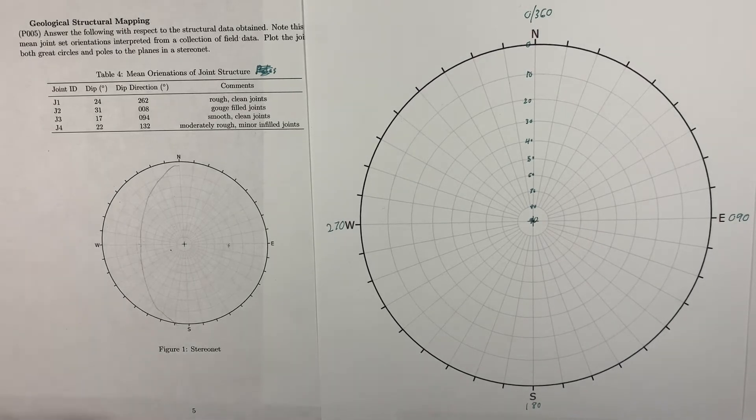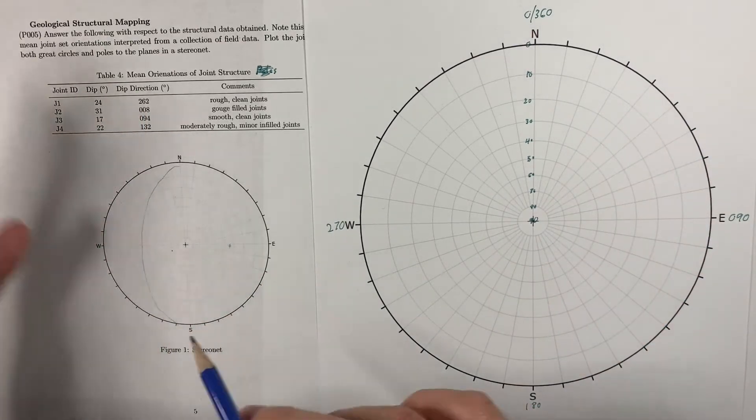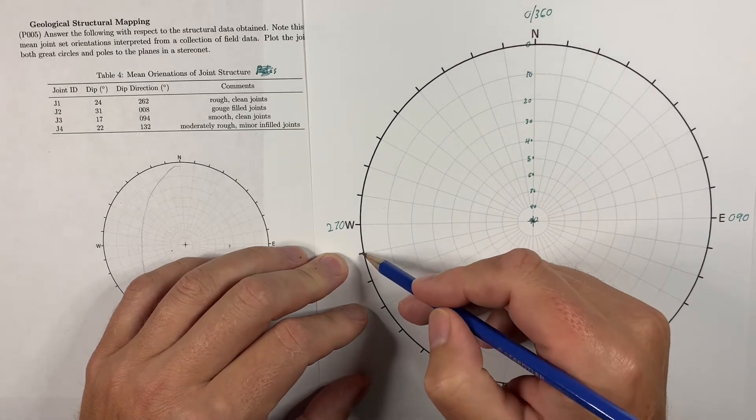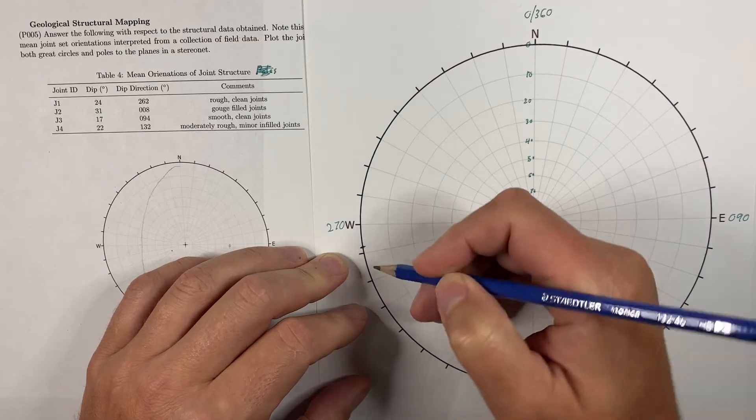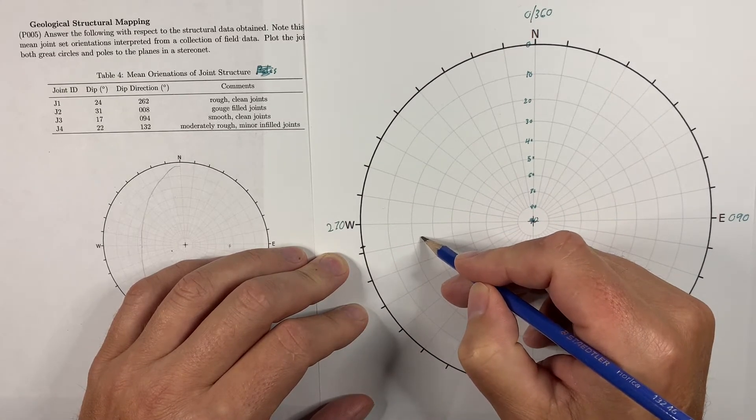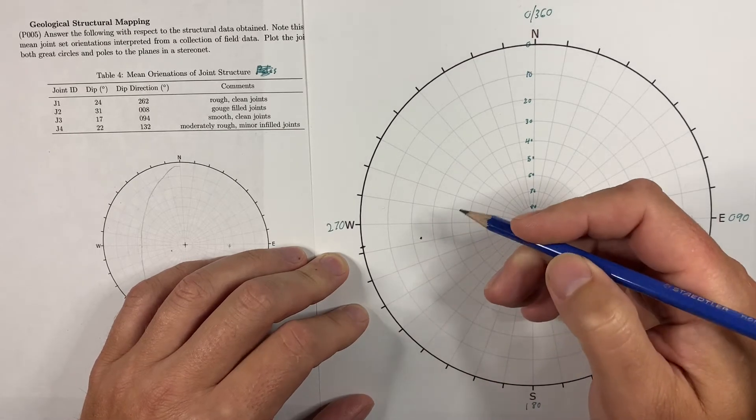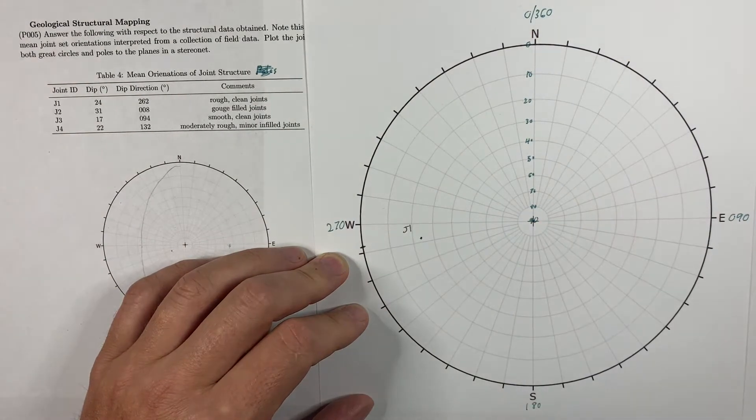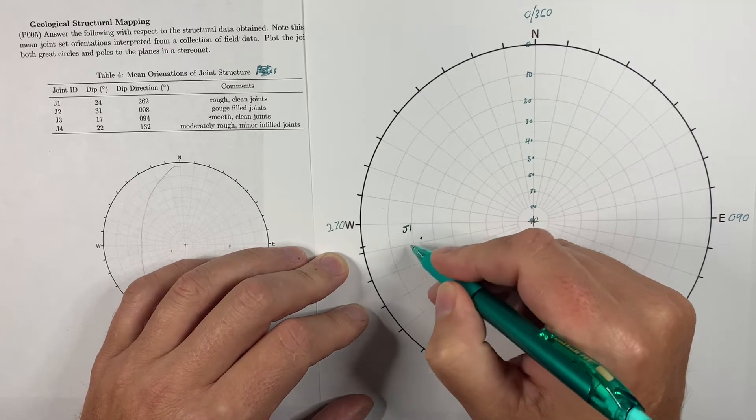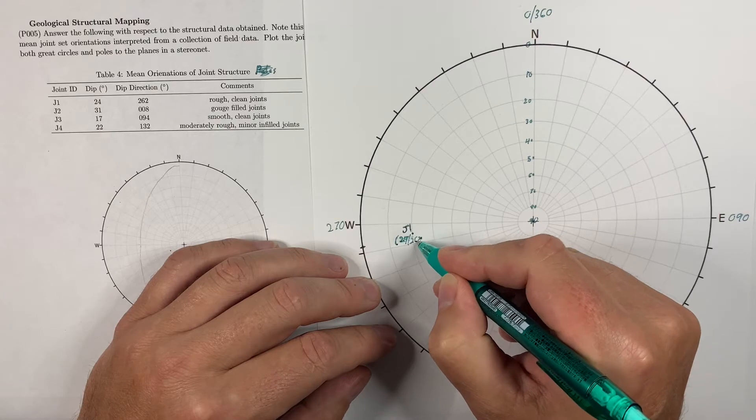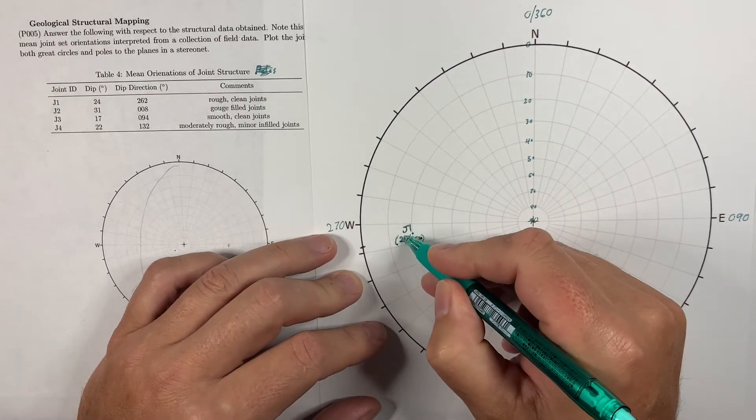Let's look at our structures that we want to plot here. The first one has a dip direction of 262. Let's try and establish the dip direction first before we look at the dip. So 262. And the dip is 24. We're dipping 10, 20, 25 is the middle, 24 right there. So that is J1, and its dip is 24, 262 is the dip direction.